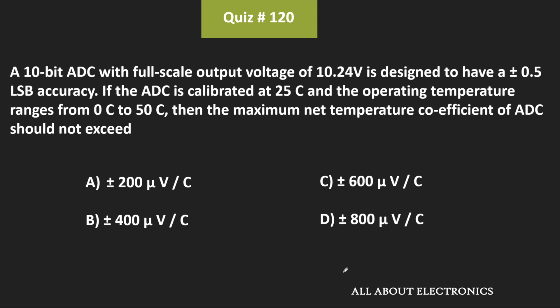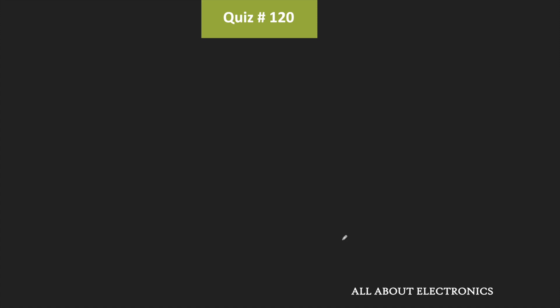So in this question, to find that, first of all, let us find the resolution of this ADC. So here we have been given that this ADC is 10-bit ADC. And the full-scale output voltage of this ADC is equal to 10.24V.